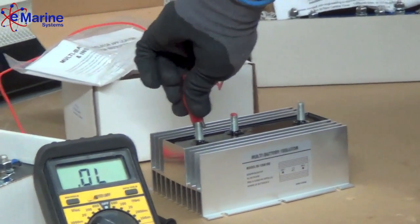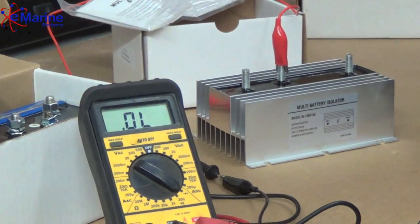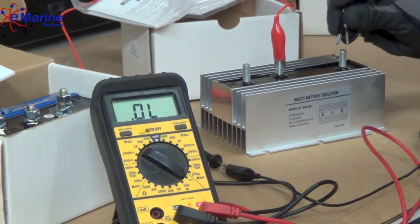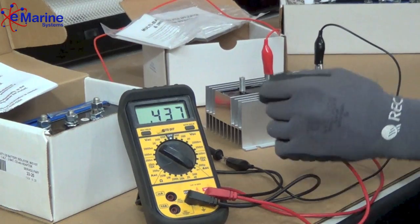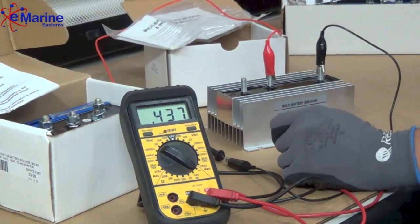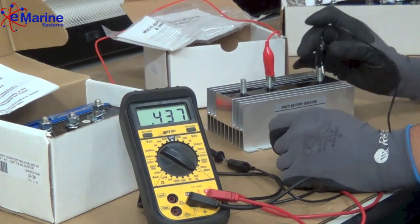We can test our other side of the other battery bank, going from the positive of the alternator over here to the other battery bank two. You can see that same reading. They might be slightly off, but that's not a problem as long as they're fairly close within a couple of tenths.